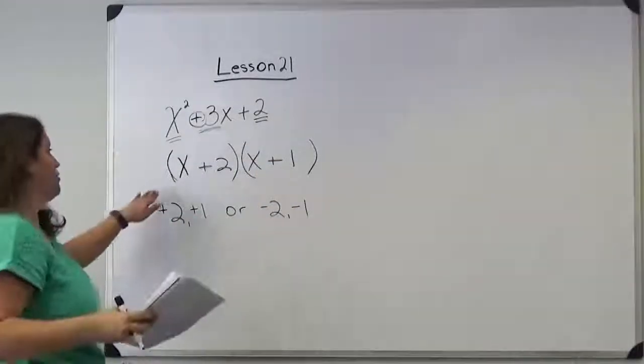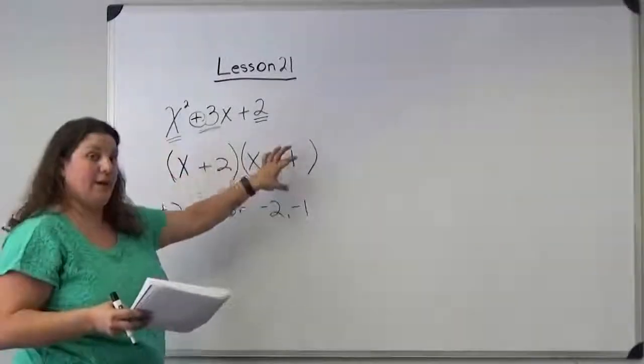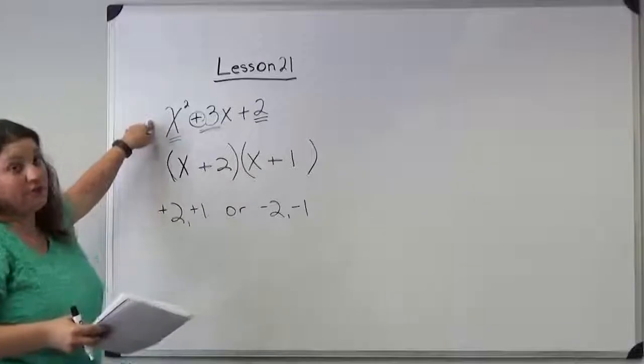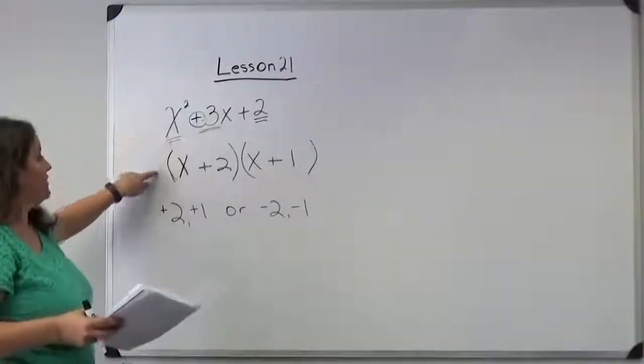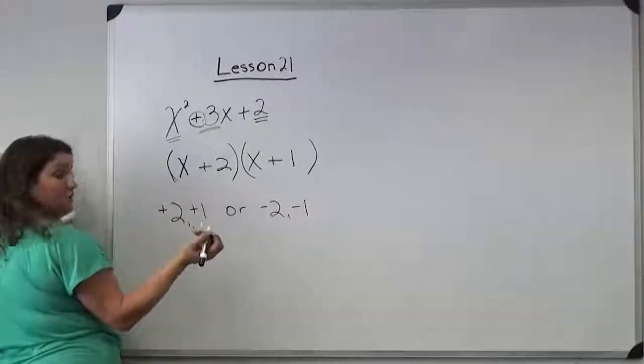Now whenever you get to your factors, make sure you multiply them back out to be sure you get your original equation. You can check yourself to know if you got your right answer before you submit it by using FOIL.